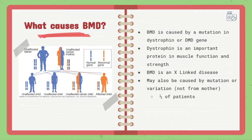What causes BMD? BMD is caused by a mutation in the dystrophin or DMD gene. Dystrophin is an essential protein in muscle function, development, and strength. BMD is also known as an X-linked disease. Boys have one X chromosome and one Y chromosome, while girls have two X chromosomes. It is known that two-thirds of patients with BMD are males, and females are normally carriers of the disease and may pass it on to their child. Some people may have a mutation or variation that is not from their mother, and this accounts for the other third of all BMD patients.